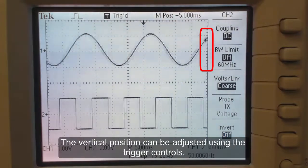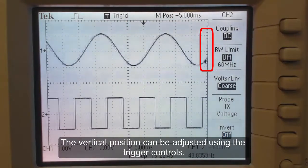The marker on the right shows the trigger level. The vertical position can be adjusted using the trigger controls.